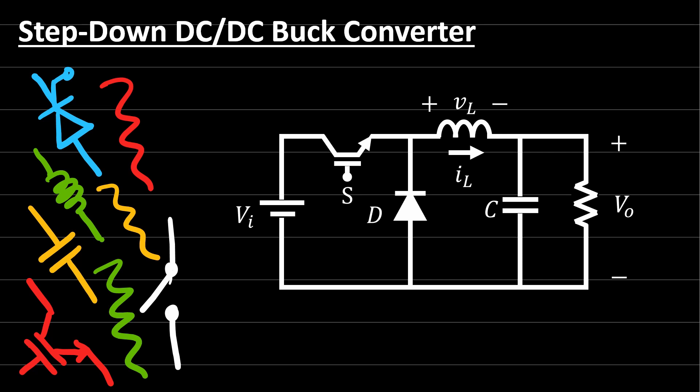Hi everyone and welcome back to Power Electronics lectures. In today's lecture we'll talk about the step-down DC to DC converters, the buck converter. The buck converter, from its name, steps down the voltage level of the source by accumulating the energy inside an inductor using two switches.